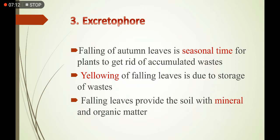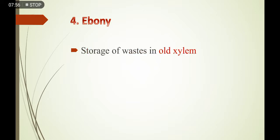Yellowing of falling leaves is due to the storage of waste compounds, because pigmented waste compounds mask the light color of chlorophyll. Falling leaves provide the soil with minerals and organic matter, and are also helpful in increasing the fertility of the soil — کیونکہ گرنے والے پتے زمین میں decomposition کے بعد نمکیات اور organic matter کی مقدار بڑھاتے ہیں۔